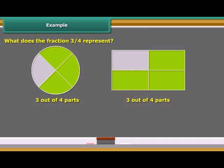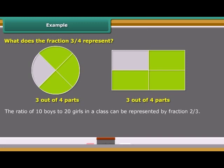The ratio of 10 boys to 20 girls in a class can be represented by fraction 2 upon 3. In the fraction 2 upon 3, number 2 is called the numerator of the fraction, and number 3 is called the denominator of the fraction.